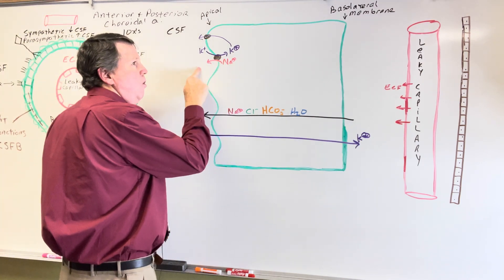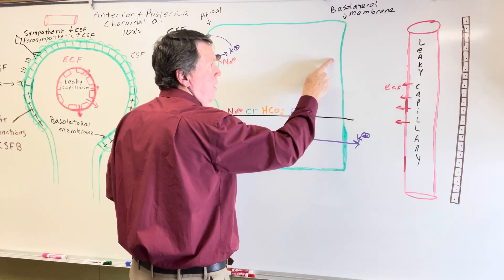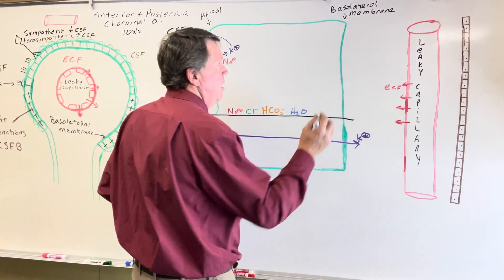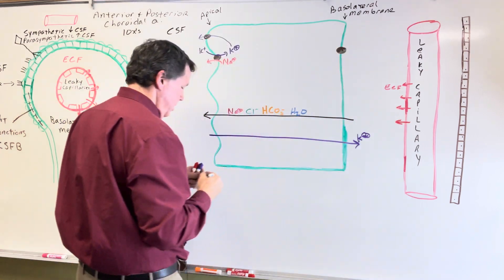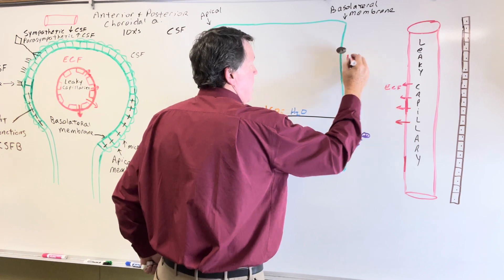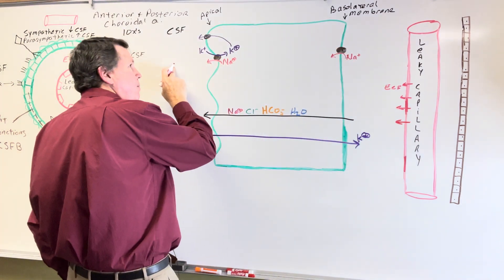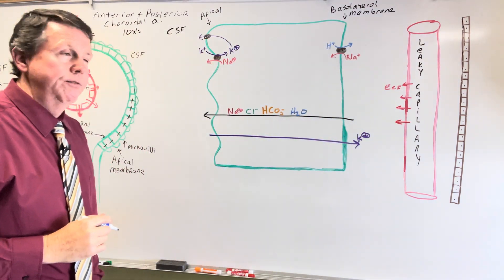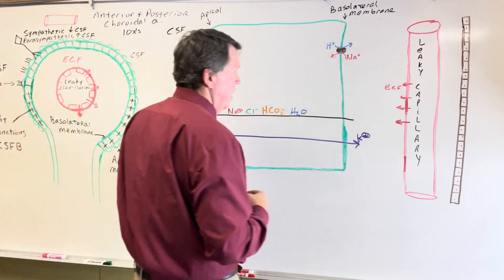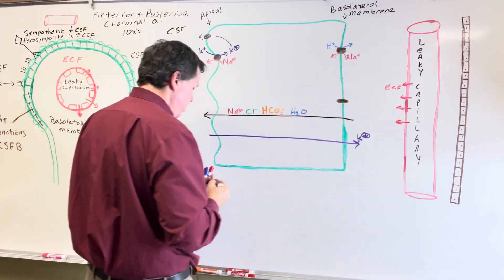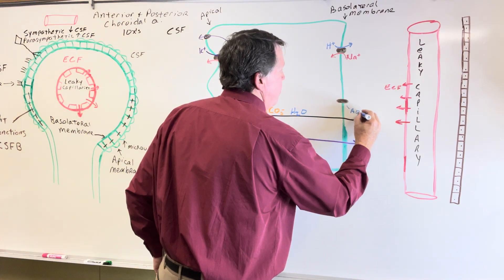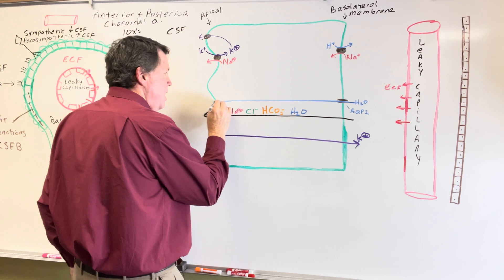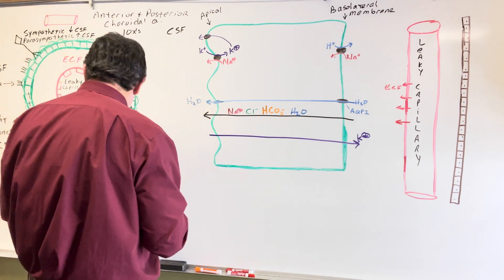On the basolateral membrane, there is an exchange protein. Sodium that has come out from the leaky capillary can enter this epithelial cell and make its way over to be pumped into the CSF. This relies on hydrogen going back the other way. There is also an aquaporin-1 channel — water comes through the basolateral side, through aquaporin-1, and then passes through another aquaporin-1 into the CSF.